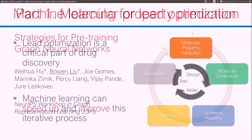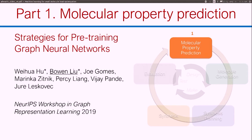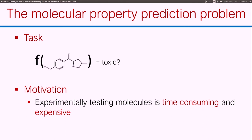This is one of our very recent works on molecule property prediction. The task here is essentially: given a molecule, can you predict one of its properties — whether it's toxic or not, whether it binds a particular enzyme or not. The motivation is that experimentally testing molecules can be pretty expensive and time consuming. So if we could build a model that makes these predictions and run virtual experiments, it could hopefully speed up the process.